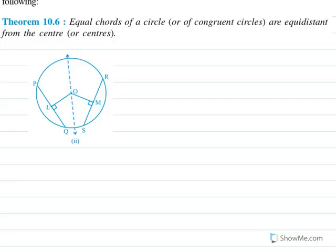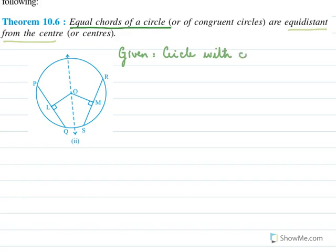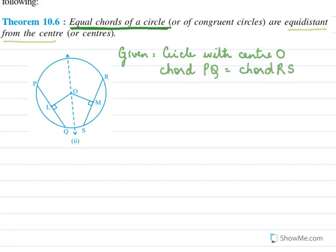In this theorem we have to prove that equal chords of a circle are equidistant from the center. Given: a circle with center O and two equal chords. In this case, PQ equals RS. What we need to prove is that they are equidistant — the distances being OL and OM — so we need to prove OL equals OM.